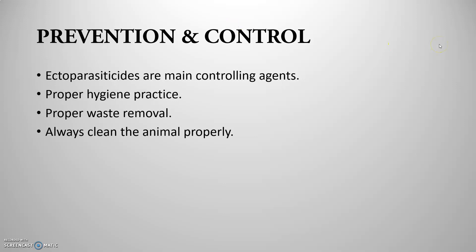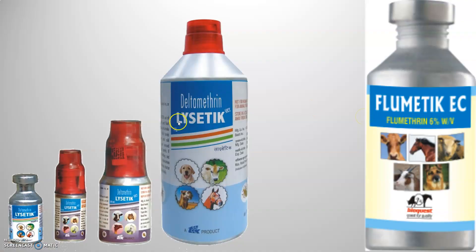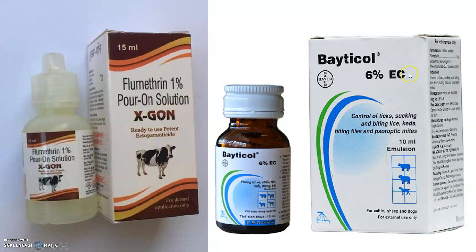For prevention and control, ectoparasiticides are the main controlling agents, along with proper hygiene practices, proper waste removal, and regular cleaning of animals. Commonly used ectoparasiticides include fipronil, deltamethrin — available as Lysect from DTK Healthcare — flumethrin, cypermethrin, and permethrin. Products include sprays such as Clear Kill spray, flumethrin pour-on, Fiprorin, Flumethrin Poron solution, and Xagon. These sprays and pour-on solutions are used to control ectoparasites in livestock.